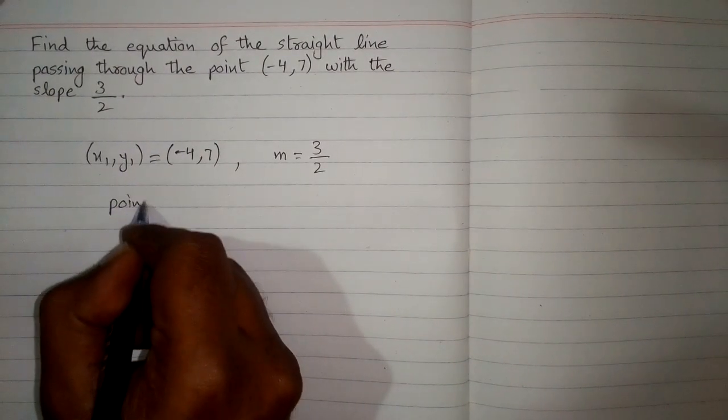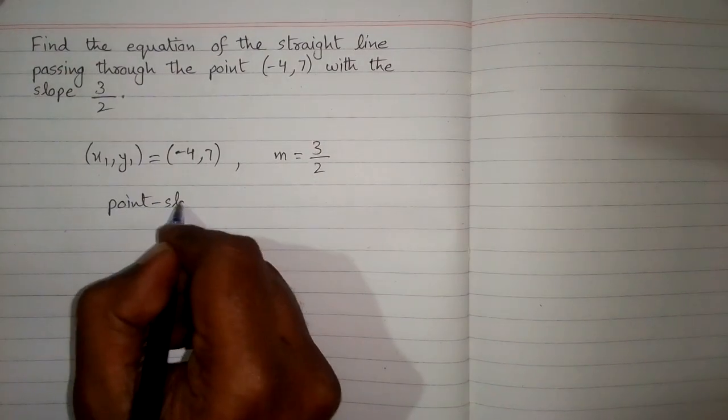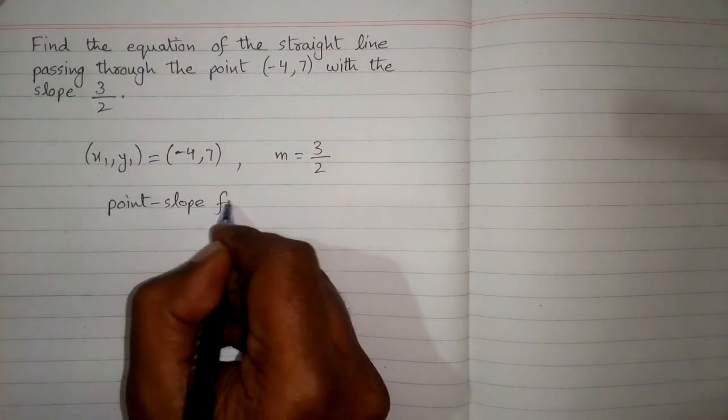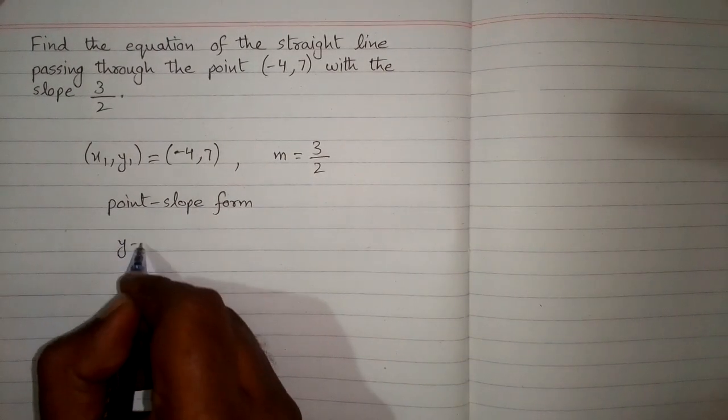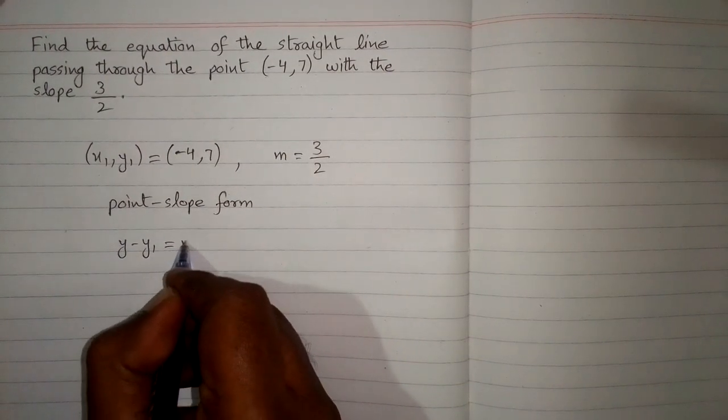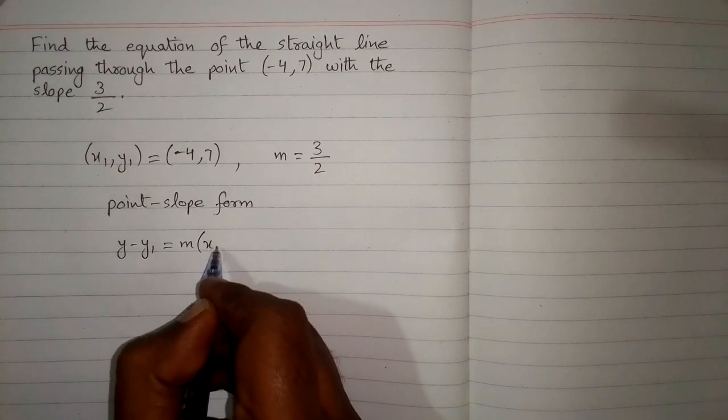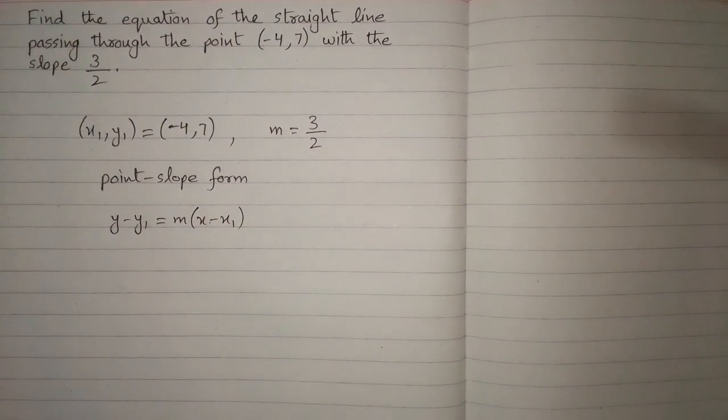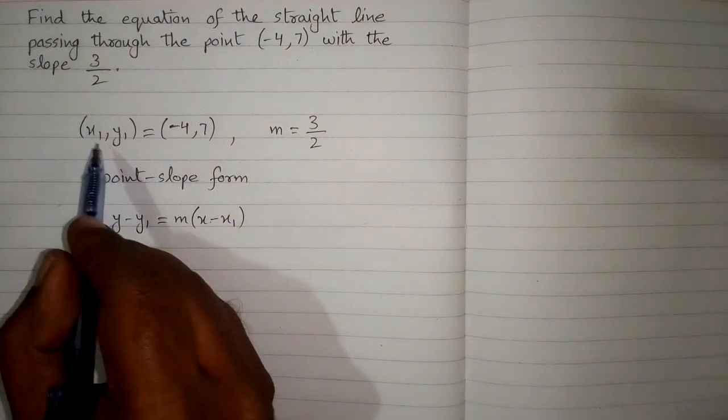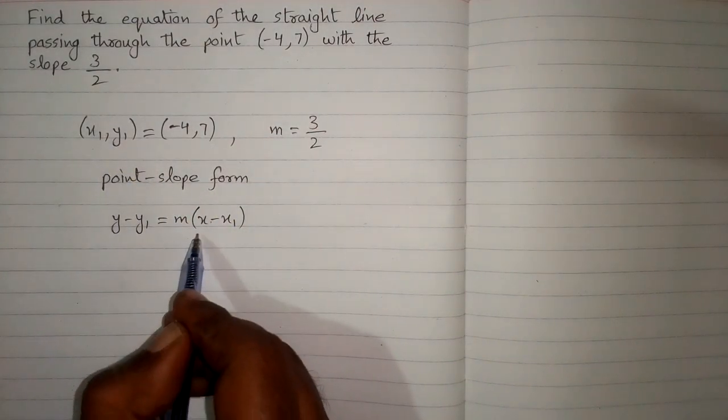Now we will use point-slope form of the equation, which is y minus y1 is equal to m times x minus x1, so we put the values of x1 and y1 in this equation.